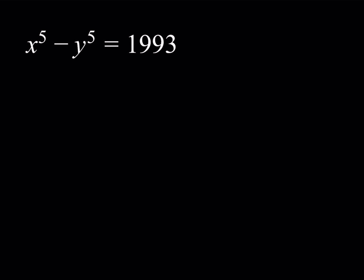We have this equation: x to the fifth power minus y to the fifth power is equal to 1993. We're looking for integer solutions. So this is a Diophantine equation in two variables, and it's a quintic equation as well.